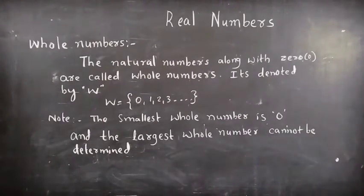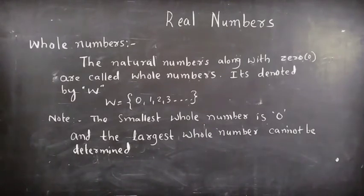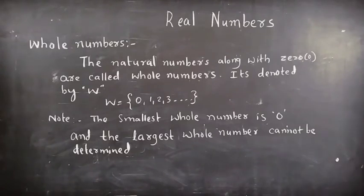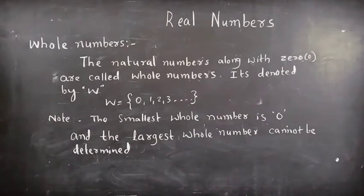Next, whole numbers. The natural numbers along with 0 are called whole numbers. It is denoted by W. W = {0, 1, 2, 3, ...}. Note: the smallest whole number is 0 and the largest whole number cannot be determined.